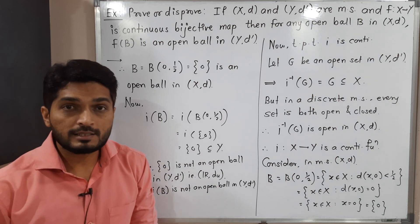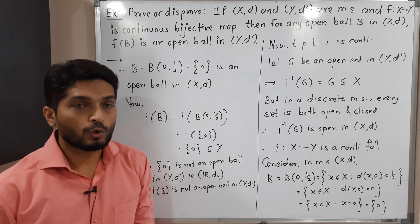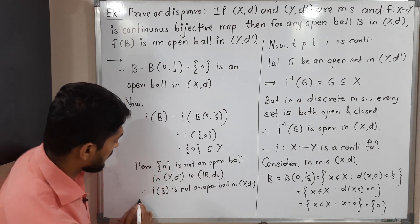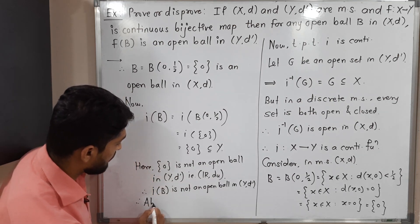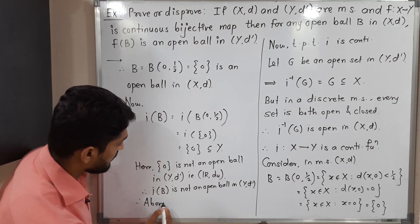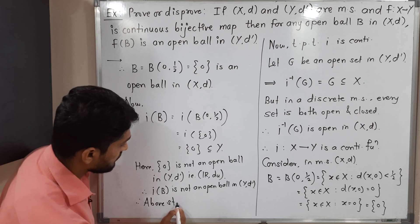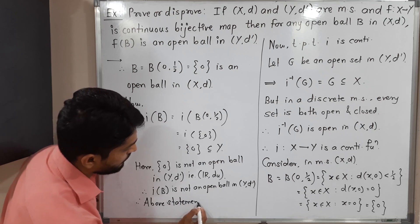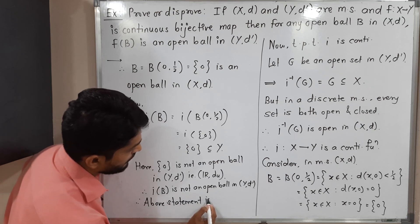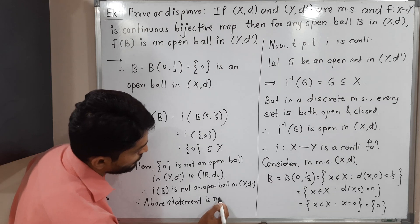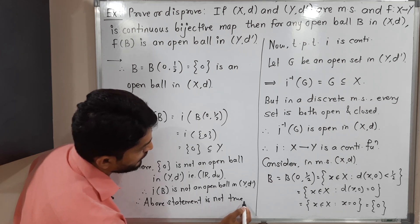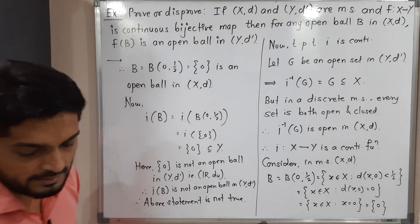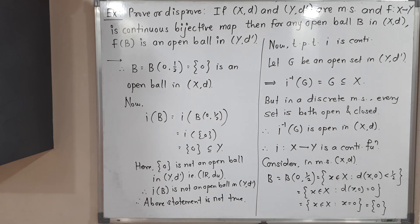So finally we have an example: two metric spaces xd and yd dash, a function f which is continuous and bijective, b is an open ball in xd, but f of b is not an open ball in yd dash. Therefore the above statement is not true. In this way we completed this example. Thank you.